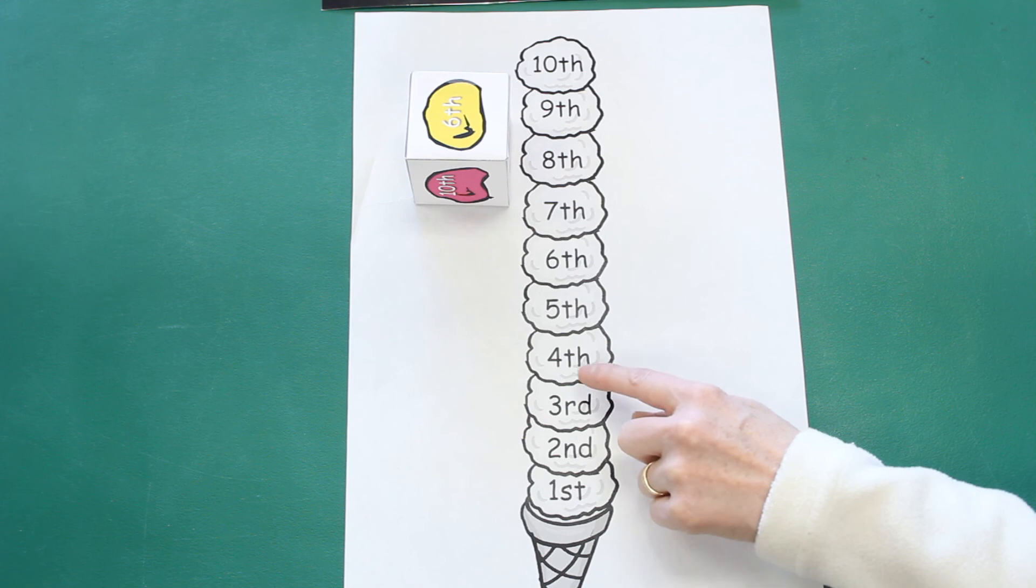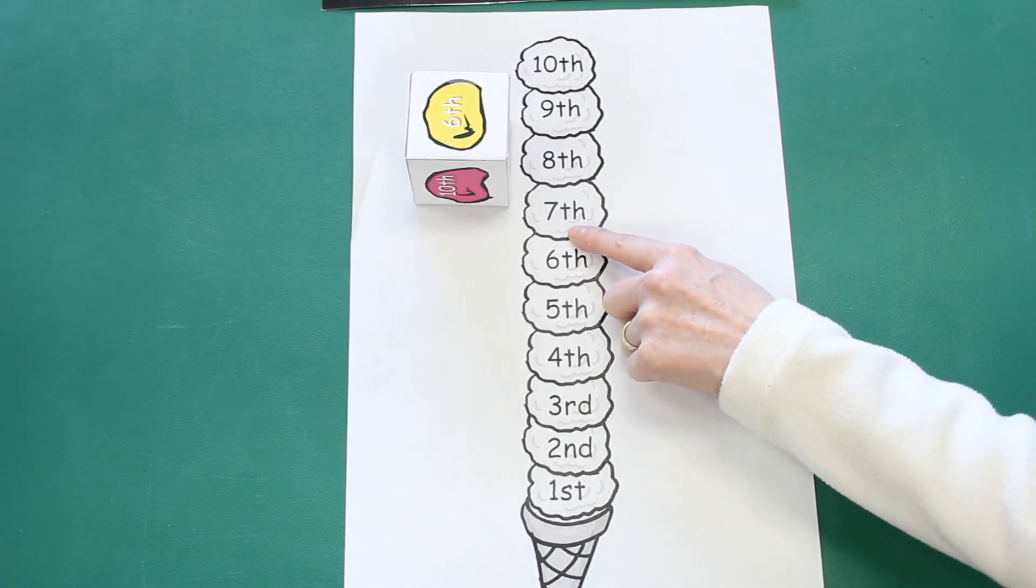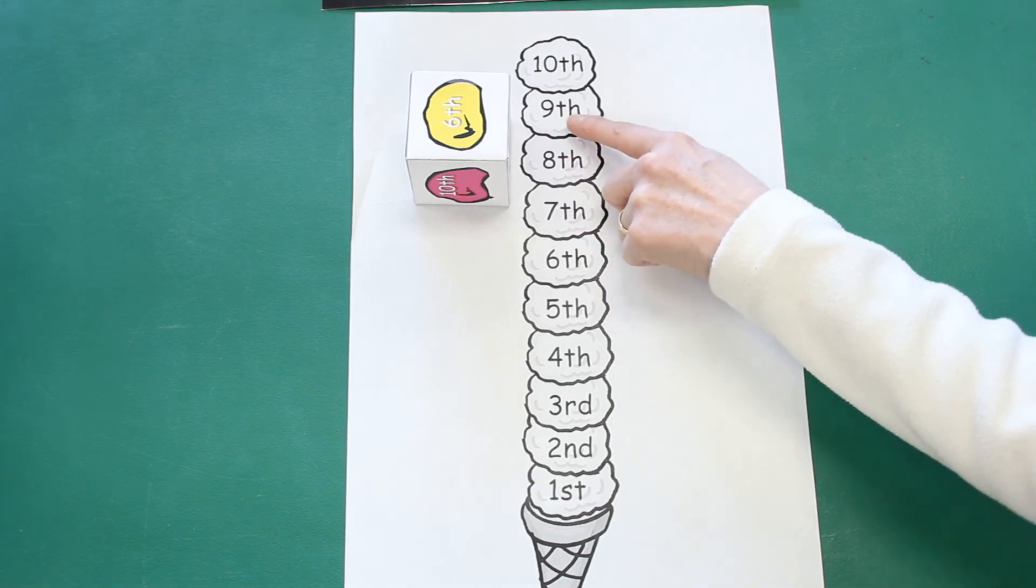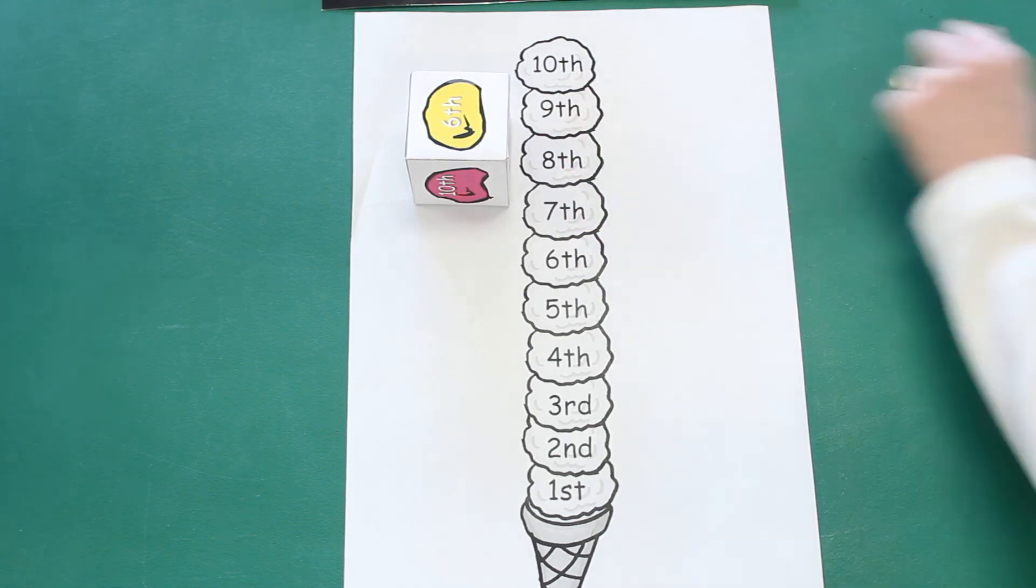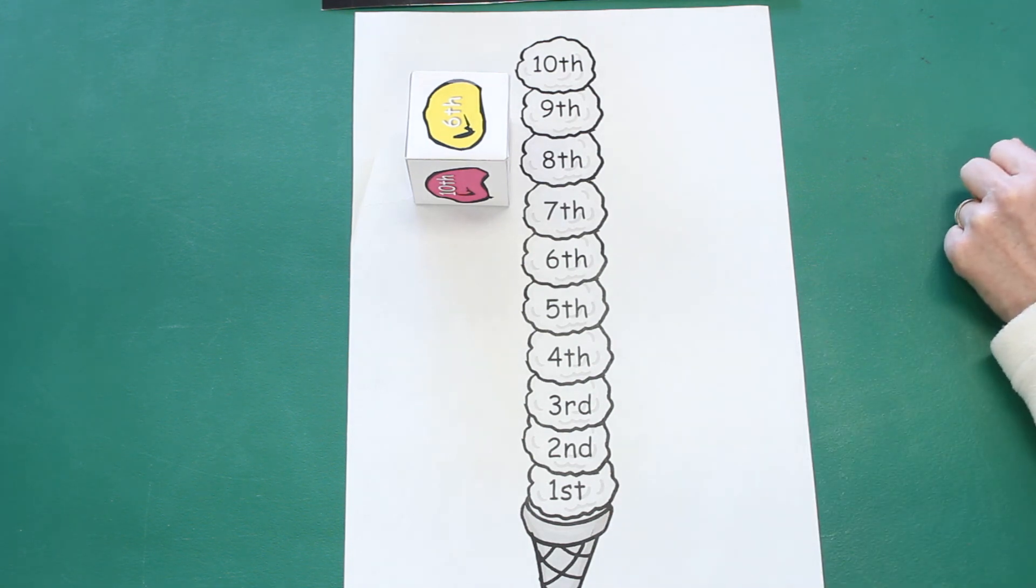Third, fourth, fifth, sixth, seventh, eighth, ninth, tenth. Our ice cream cone has ten scoops of ice cream.